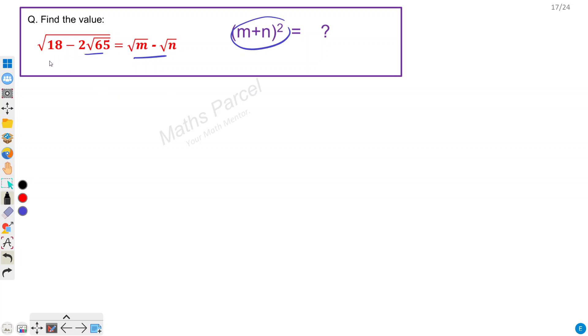In other words, the question says that this whole surd expression can be written as a difference of two square roots where m and n are integers.